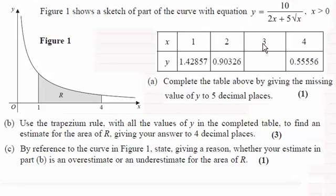It's just a question of putting x equals 3 into this equation. If you do that, the answer you should get to 5 decimal places is 0.68211.